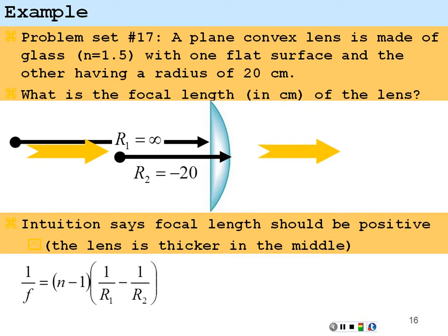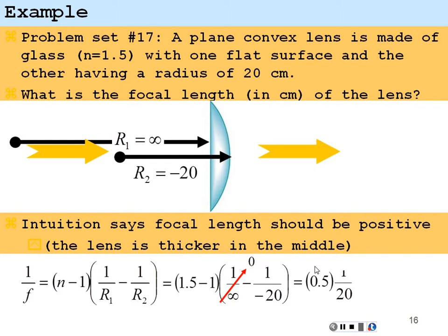Using the lens maker equation: 1/f = (1.5 - 1)(1/infinity - 1/(-20)). The 1/infinity term is zero, and the double negative gives a plus, so we have 0.5 times 1/20, which equals 1/40. Flipping both sides, the focal length is 40 centimeters, positive — as expected for a converging lens.